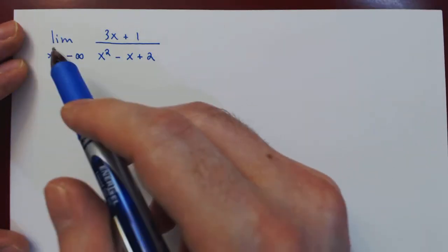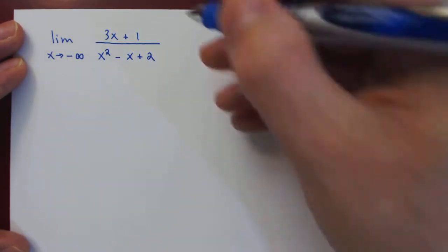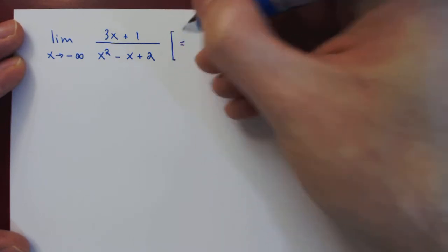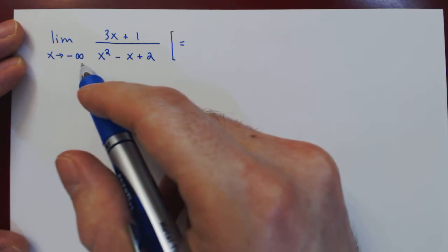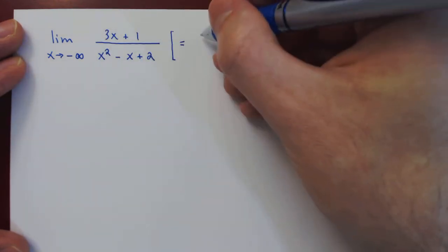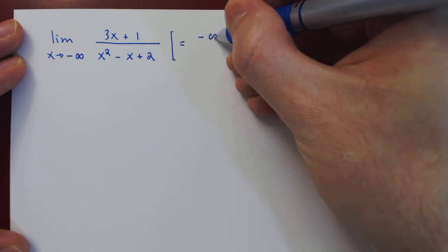Okay, so in this video we will find the following limit. As always, we verify the case. As x goes to negative infinity, on the numerator the largest term is 3x, which goes to negative infinity, so it dominates the numerator.